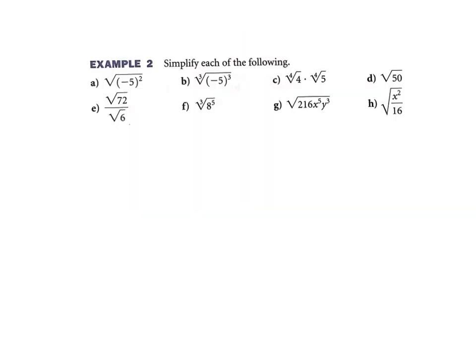Let's try a few of those. Part A has a negative inside — so usually we'd say you couldn't do it, but it's actually squared. If you square negative 5 inside, you get 25, and the square root of 25 is 5. That one's okay. Part B says the cube root of negative 5 cubed — because the cube root and the cube are inverses of each other, that's just going to be negative 5; they cancel each other out.